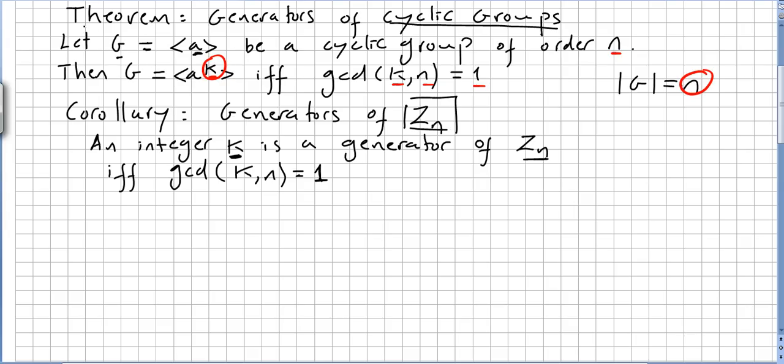So this theorem is very handy to calculate all the generators of a cyclic group. Once you find one generator, it's easy to find the others. And it's much quicker than finding generators one by one through direct calculation. So once one generator of a cyclic group has been found, all generators of the cyclic group can easily be determined.